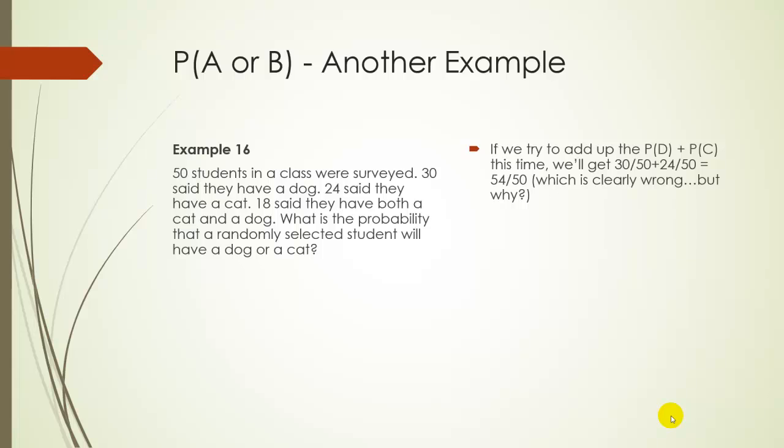Well, if we just try to add them together, it's not going to work. We have 30 out of 50 that said they had a dog, 24 out of 50 that said they had a cat. That would give you 54 out of 50. So that's not working. But why isn't it working?